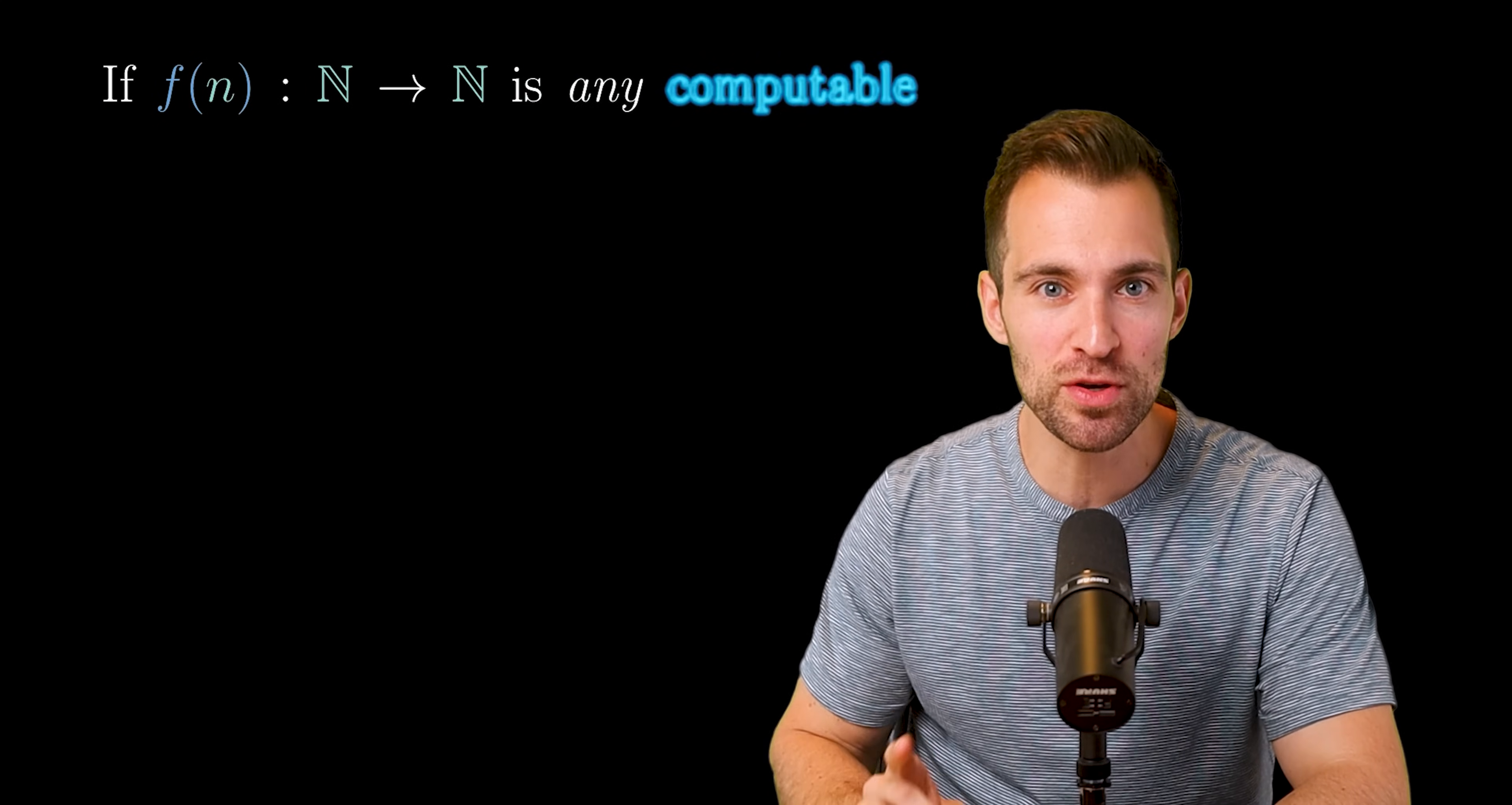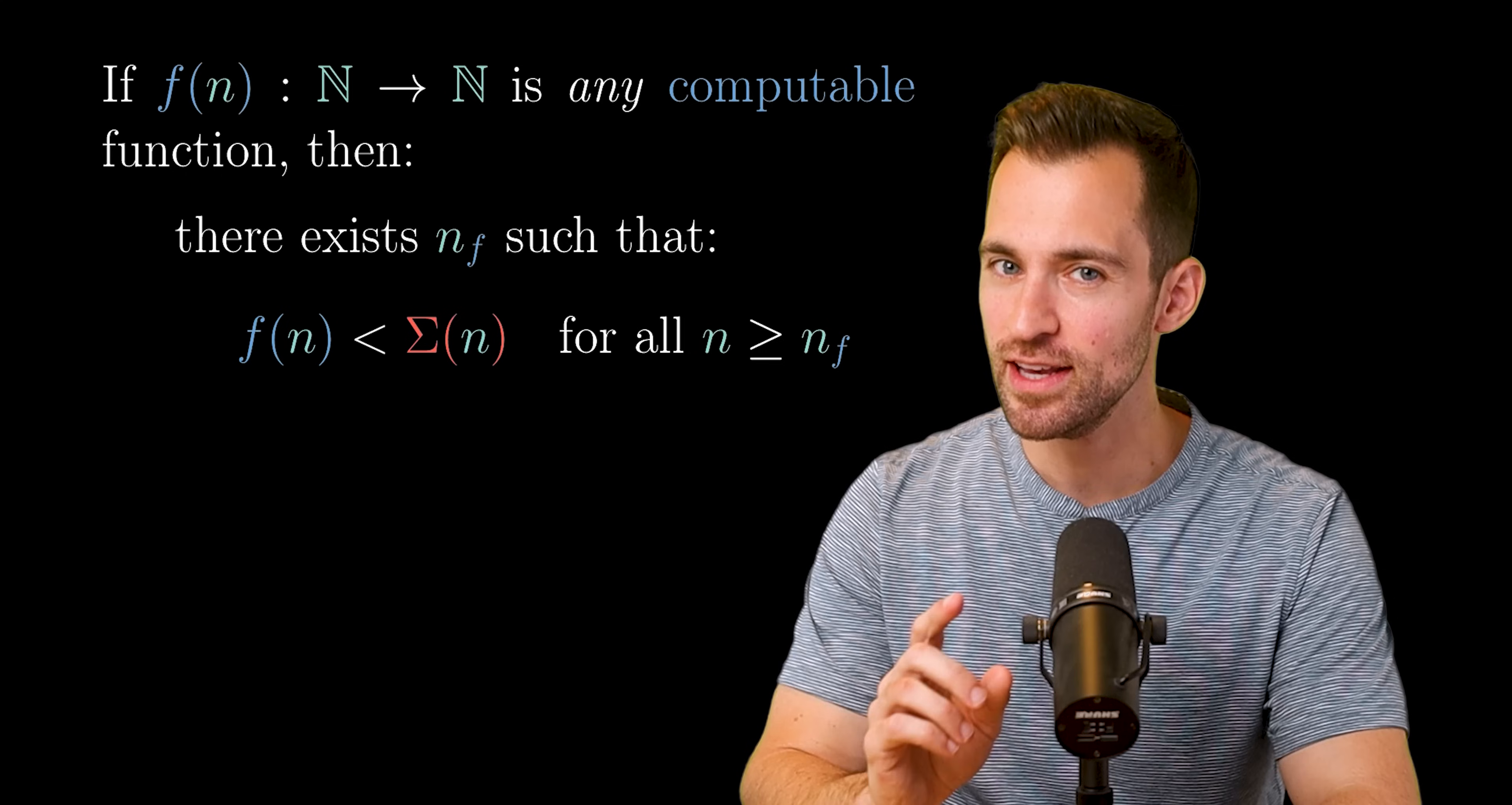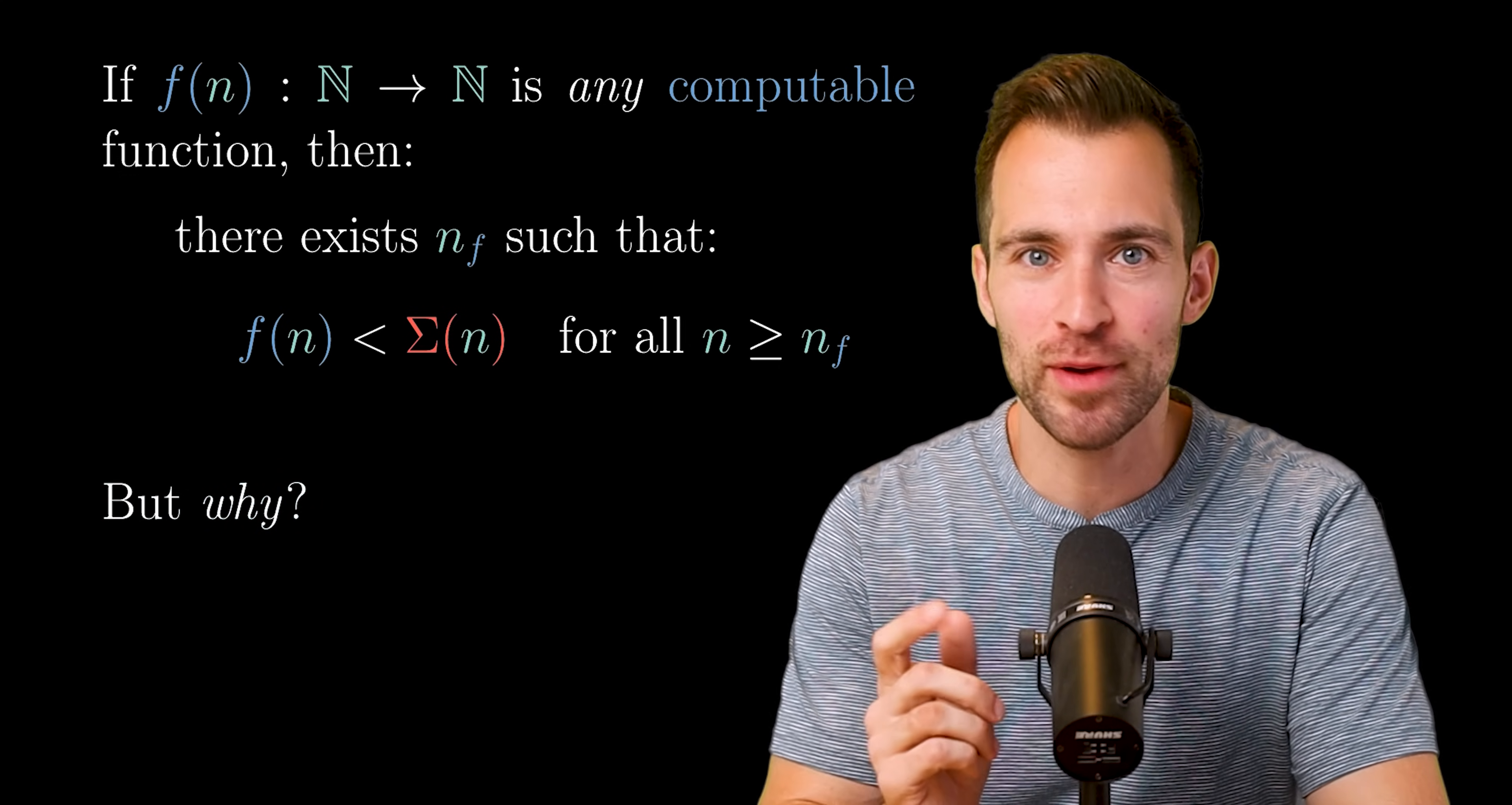In particular, if f(n) is any computable function, then there exists some integer such that beyond that point, sigma n is larger. In other words, given any computable function, sigma n grows faster than it beyond a point. But why, you may ask?